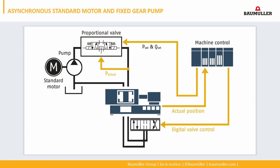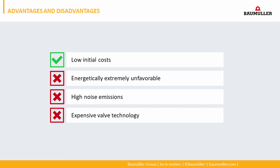The first system consists of a standard induction motor which runs directly on mains and therefore with a constant speed. The pump is an internal gear pump with fixed displacement, meaning the pump delivers permanently a constant flow rate, no matter if this is currently needed on the machine or not. The machine control sends pressure and volume set values to proportional valves, which then control the hydraulic pressure and flow rate. The only advantage of this system is its low initial cost, but there are several disadvantages: high energy consumption, high noise emission and expensive valve technology.